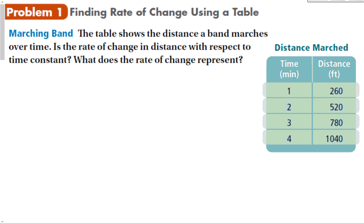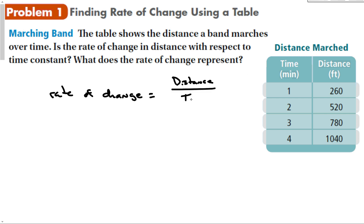For our first problem, the table shows the distance a band marches over time. We need to determine if the rate of change in distance with respect to time is constant. Rate of change is going to be equal to distance over time — distance is the dependent variable, the output of the function, and time is the independent variable.